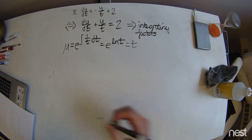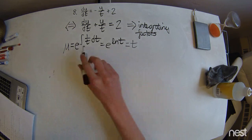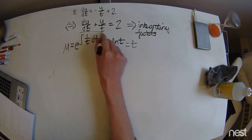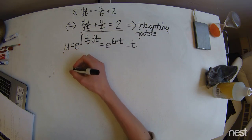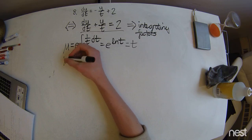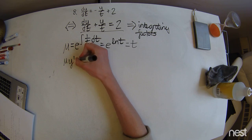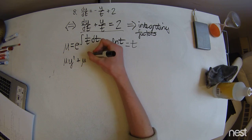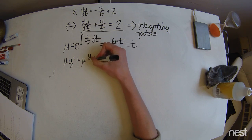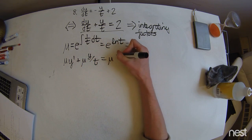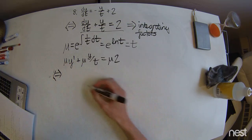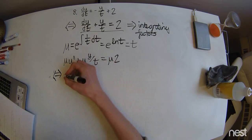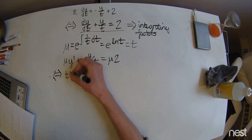The next step in the method is to multiply out this equation right here by mu. So we'll go ahead and do that. And plugging in t for where we see mu, we're going to get this.